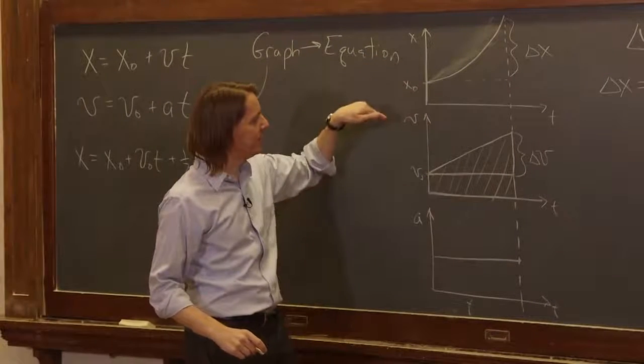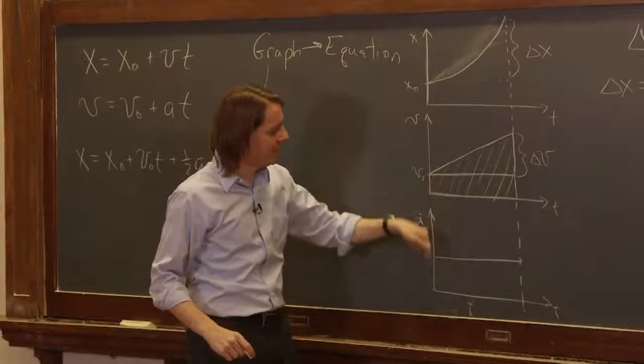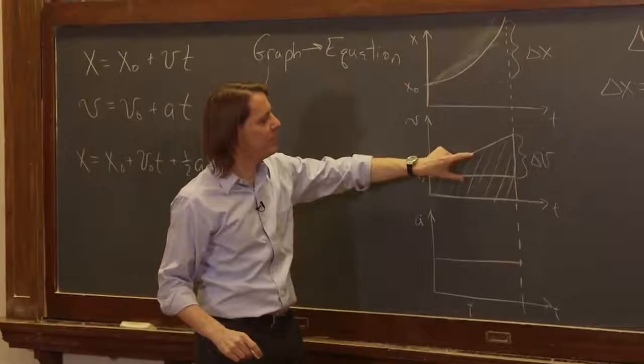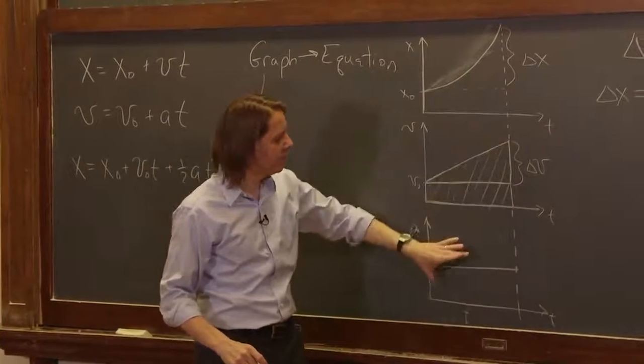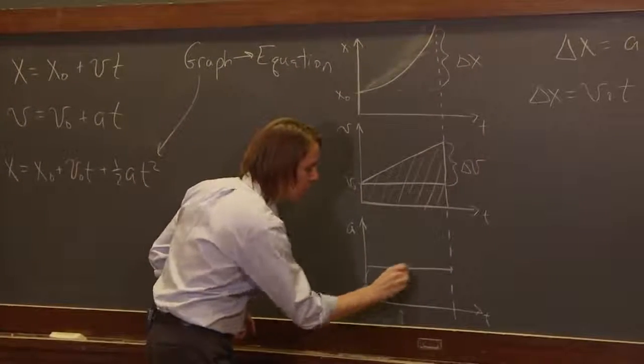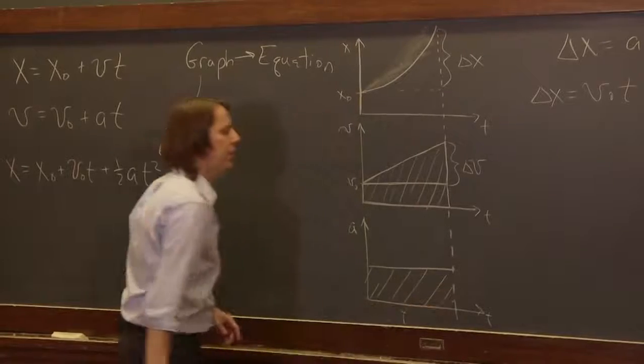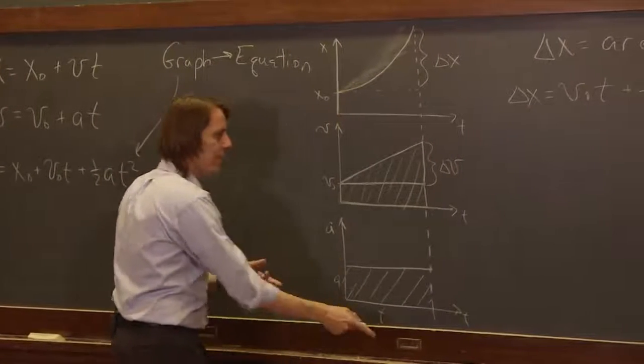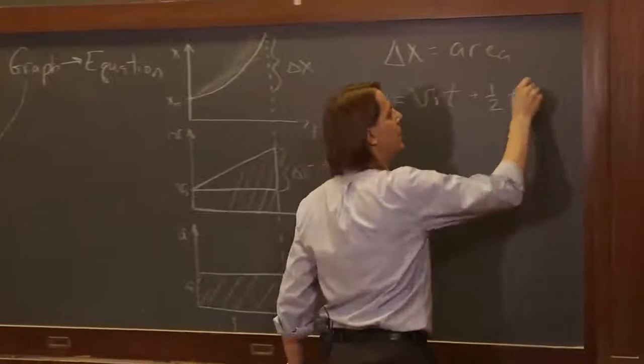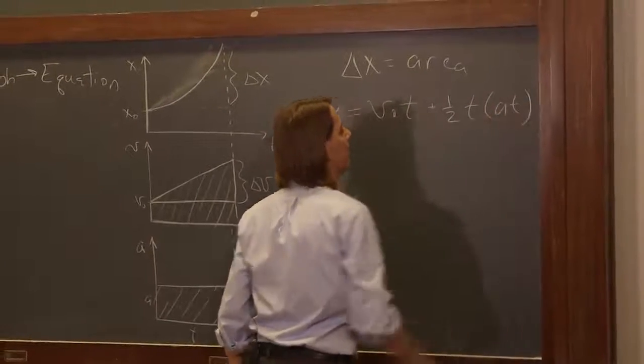This delta v is the area under this curve, right? Whenever you go down velocity or position, velocity, acceleration, the delta here is always the area here. So the delta here is the area here. All right, what's the area of that? It's a times t. So one-half t times at.